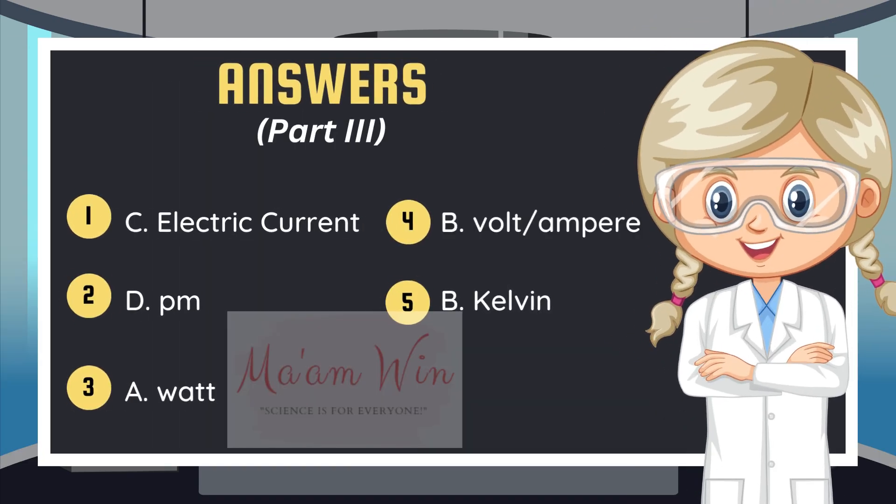Here are the answers for part 3. Number 1, letter C, electric current. Number 2, letter D, picometer. Number 3, letter A, watt. Number 4, letter B, volt per ampere. Number 5, letter B, Kelvin.